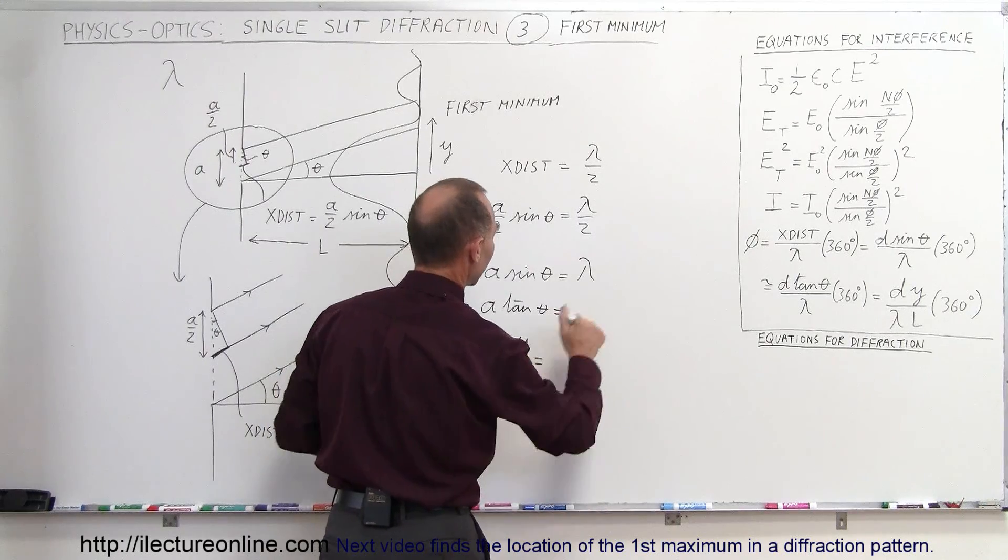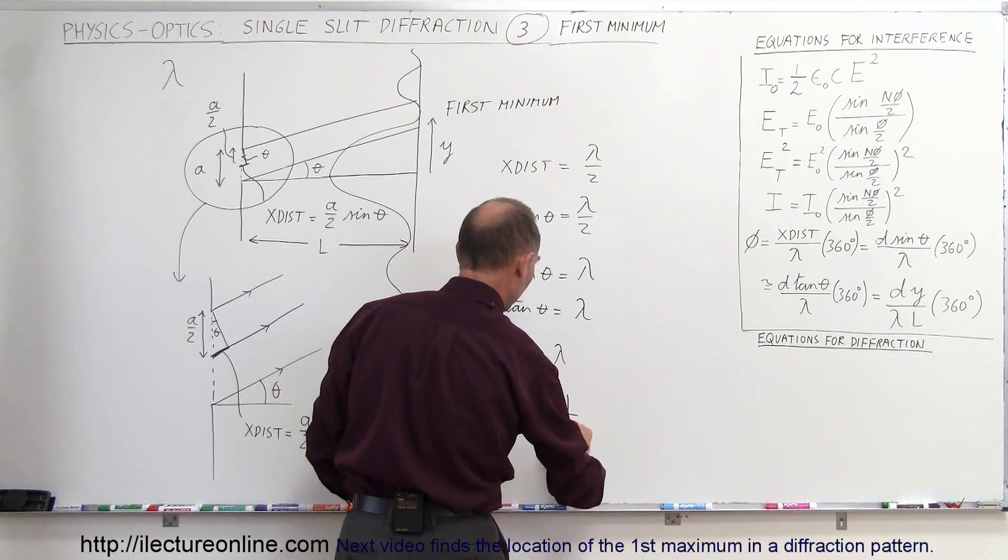So we can write that a times y over L equals... oh let's see here, I shouldn't have lambda divided by 2 because I multiplied both sides by 2. So this is simply lambda, not lambda divided by 2. I magically just put the 2 back—I shouldn't do that. So a times y over L equals lambda, which means that y is equal to the wavelength of the light times the distance to the screen divided by the width of the slit. And that's how we find the first minimum. The first minimum is found under those conditions.